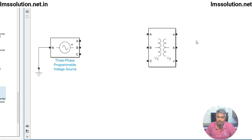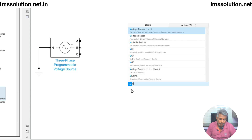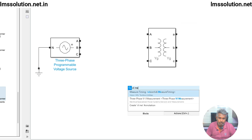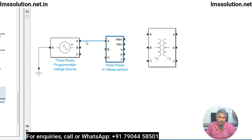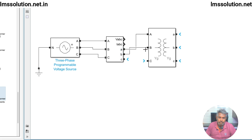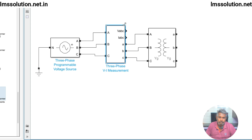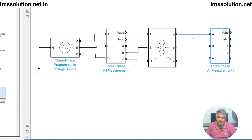For measurement I am going to use three-phase VA measurement — just use the three-phase VA measurement block. Connect inputs A, B, C. Next I am going to connect the same measurement on the secondary side as well.